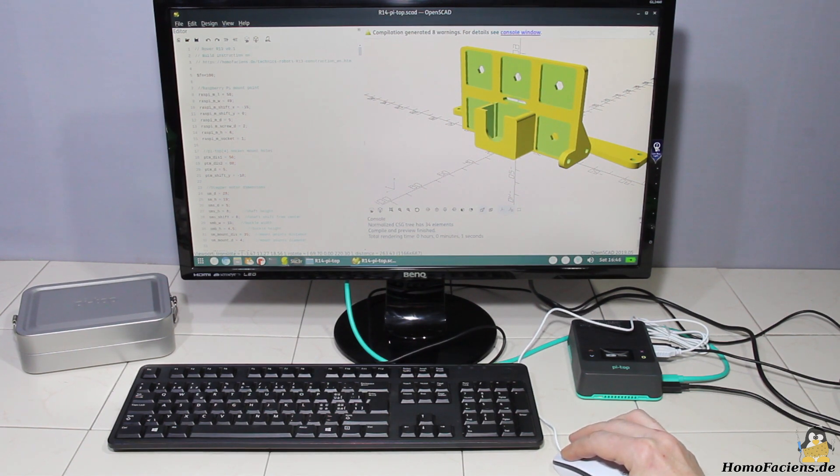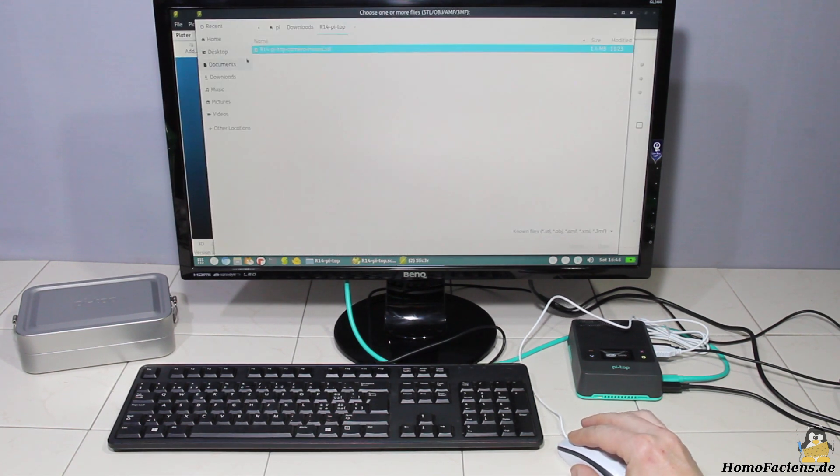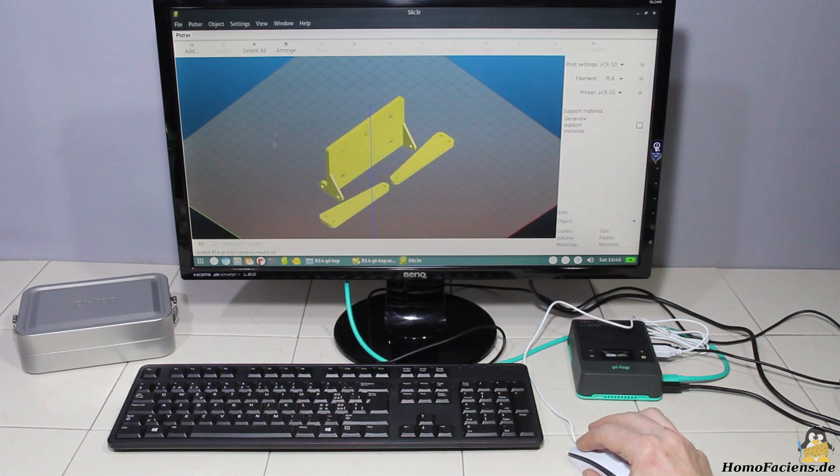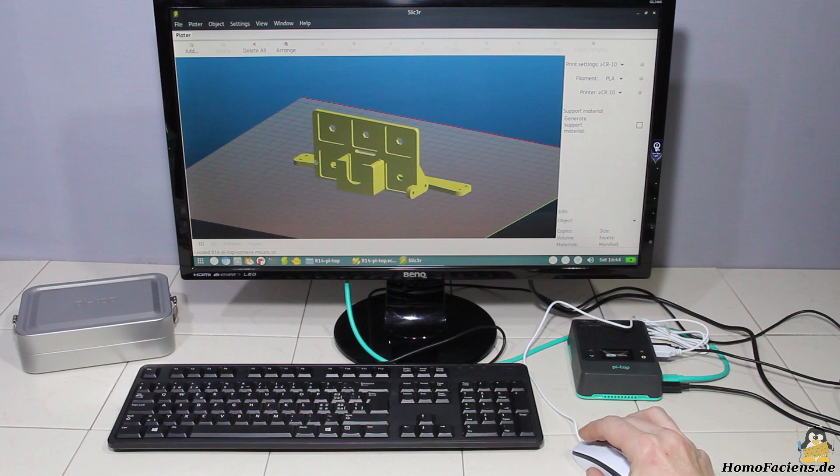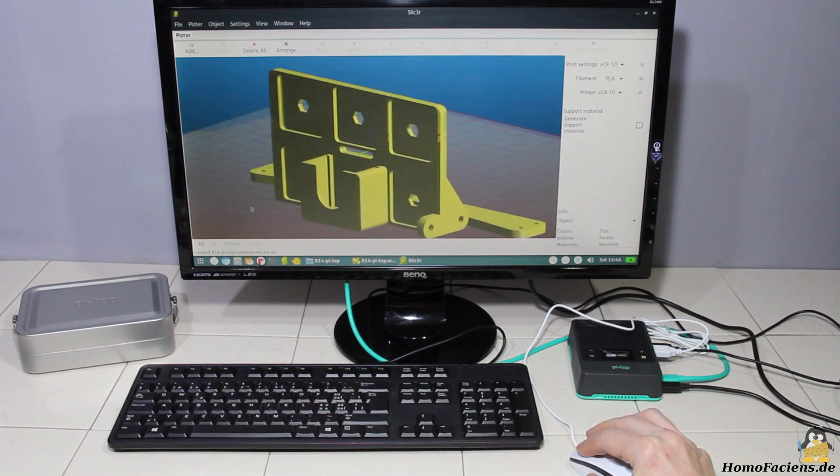Slicer is included in the official Raspbian packages, so besides designing you can also prepare the robot parts for 3D printing with the Pi-Top 4. Again, the Pi-Top 4 shows no weakness. Slicer runs smoothly and you rarely get a break and so time to think if what we are doing makes really sense.